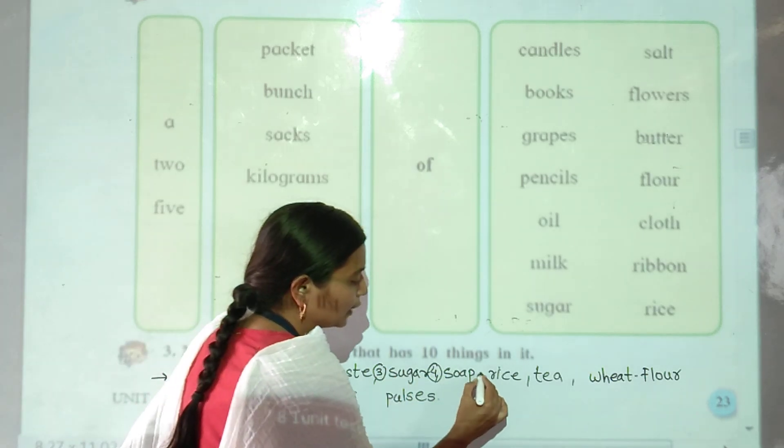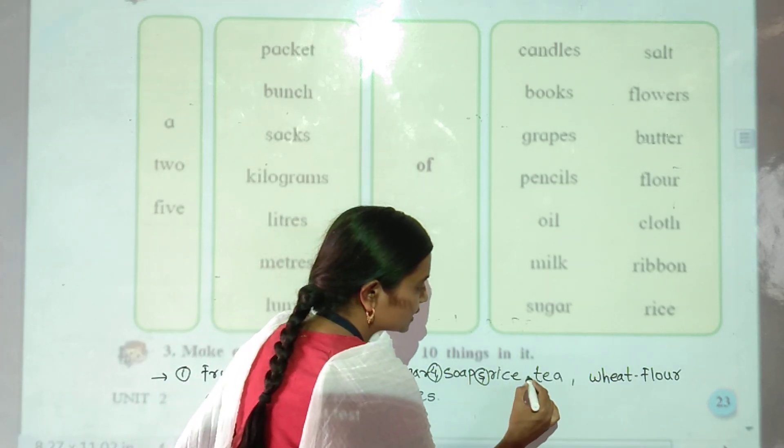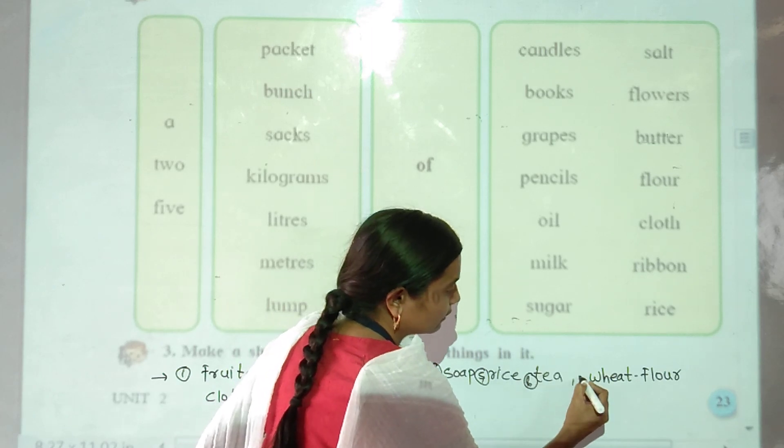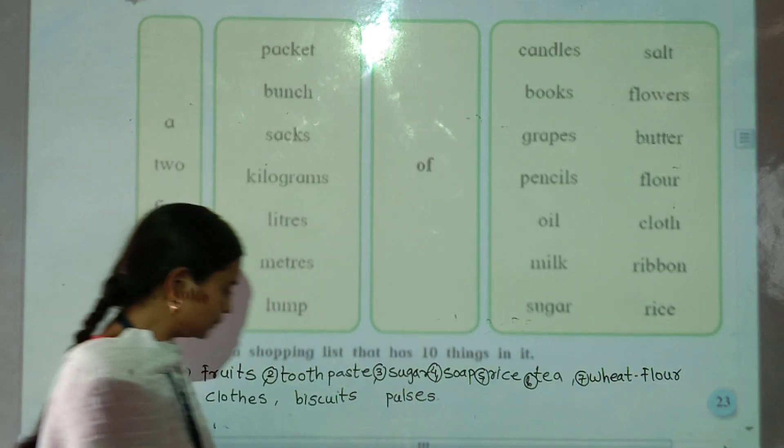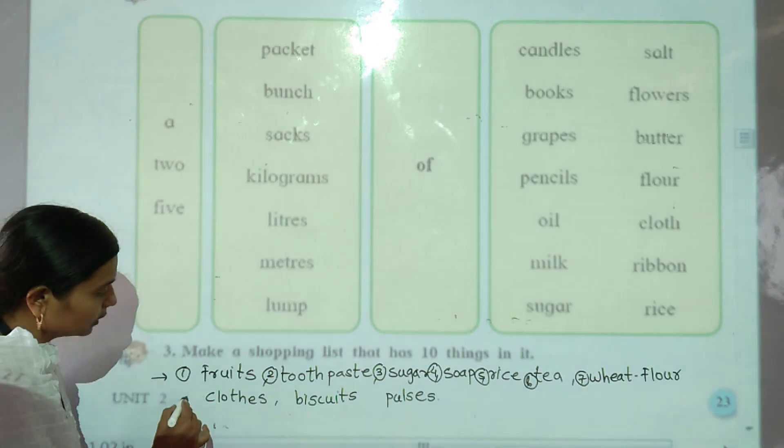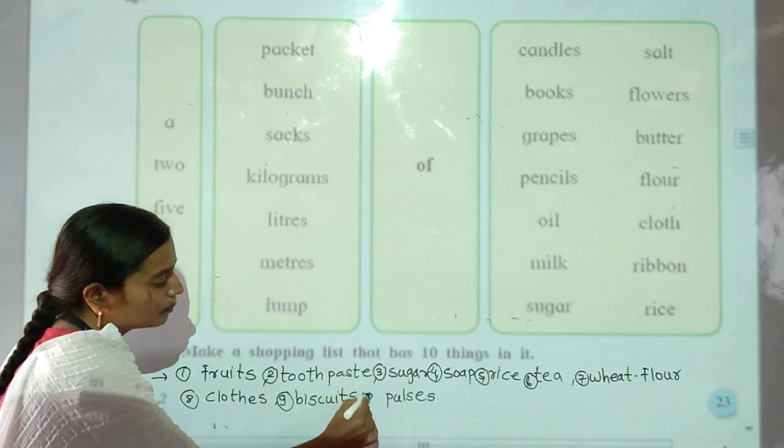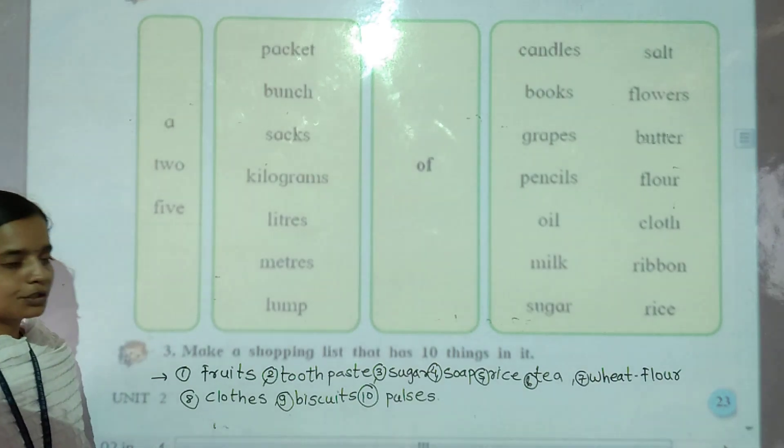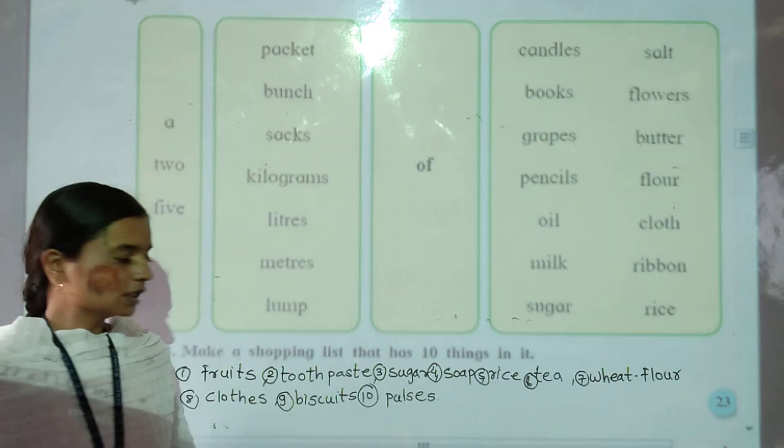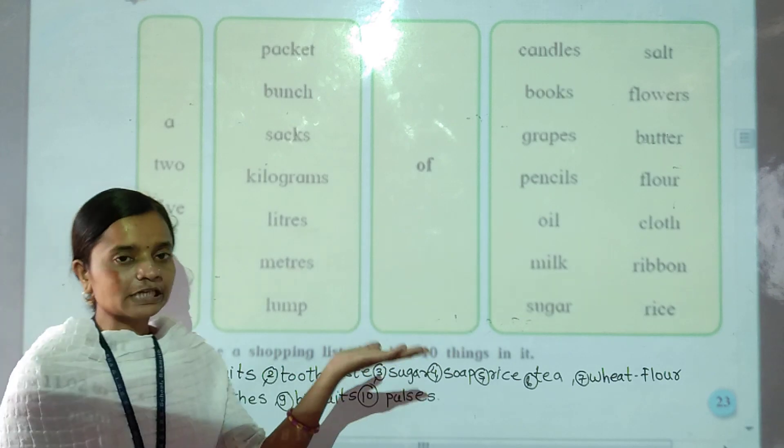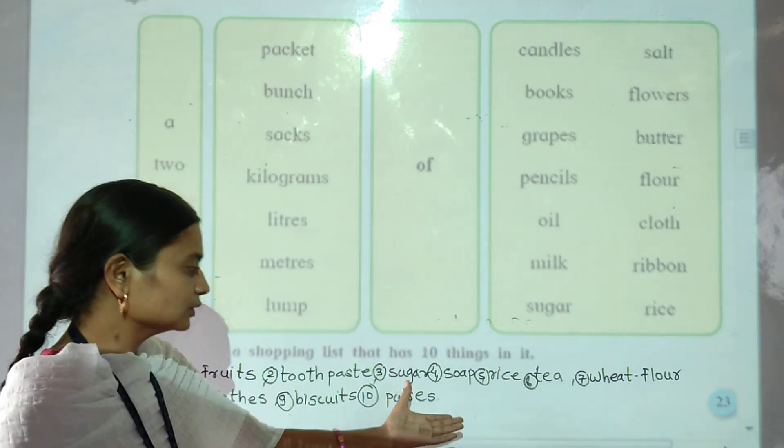Number four soap, number five rice, number six tea, number seven wheat flour, number eight cloth, number nine biscuit, and number ten pulses.